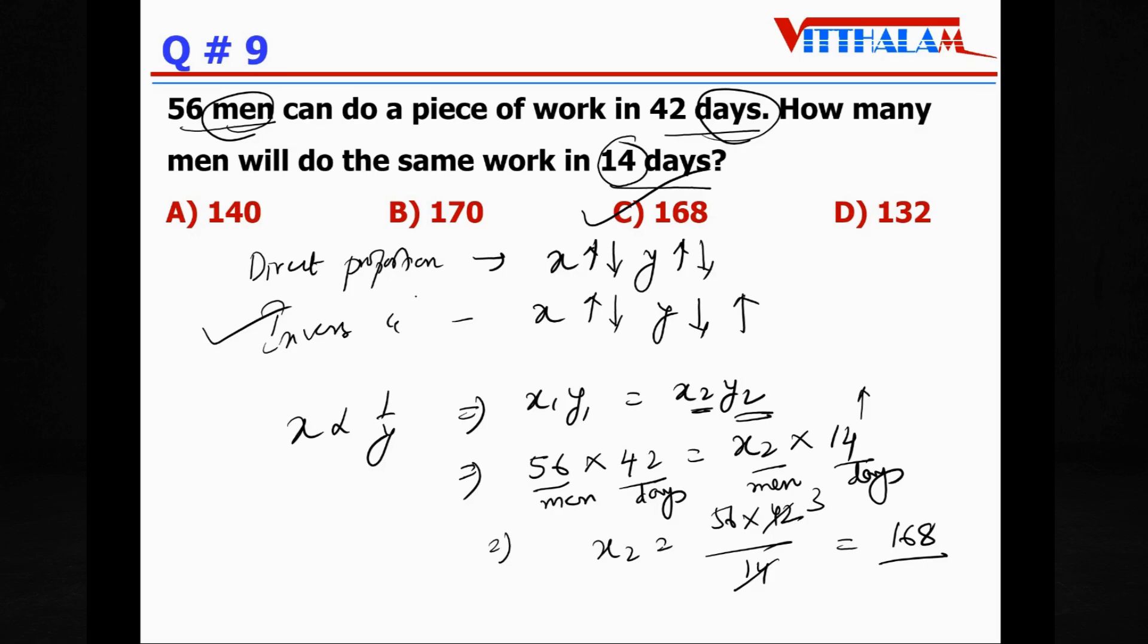You can also do this quickly. Just compare these two numbers. Earlier 42 days, now 14 days. Therefore it is one-third. Days are reduced by one-third. That's why men will increase by one-third, that is three times. So 56 × 3. That's what the final answer came.